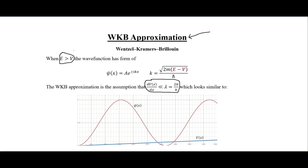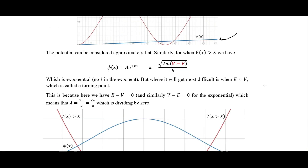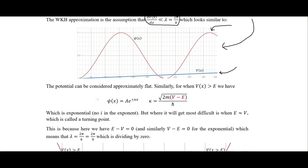So that looks something like this — this isn't an actual wave function solution, just an illustration. The blue line is our slowly varying potential; we can see it's angled upward slightly but varying a lot more slowly than the wavelength of the wave function. The WKB approximation is essentially that the second derivative term is approximately zero.